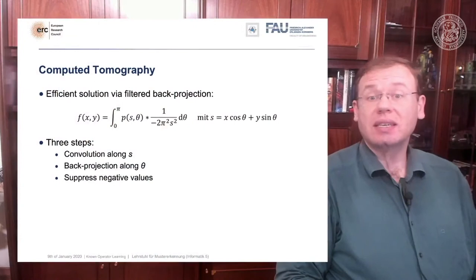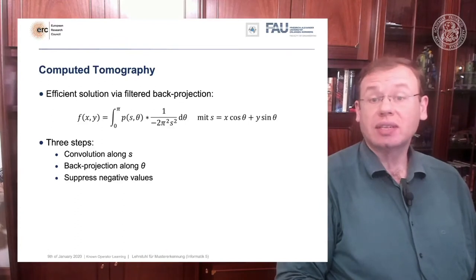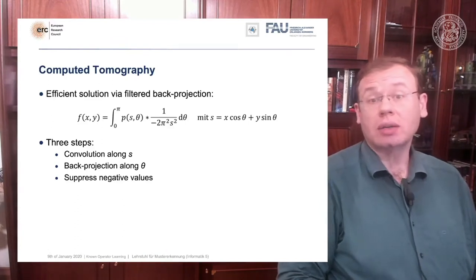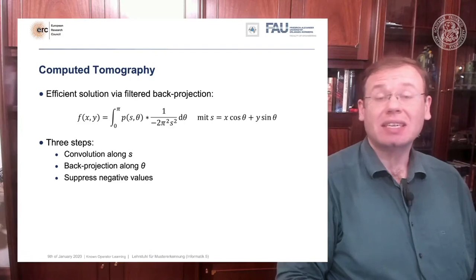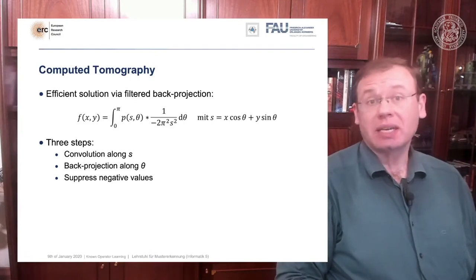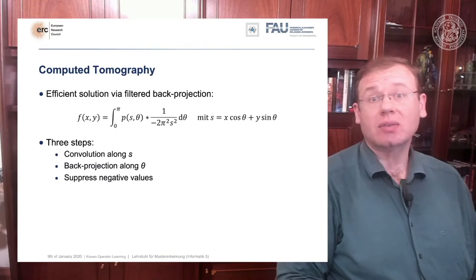Here you see the formal solution to the CT reconstruction problem, the so-called filtered back projection or radon inverse. This is the equation that I referred to earlier that has already been solved in 1917, but CT scanners have only been realized in 1971. So actually, Radon, who found this very nice solution, has never seen it put to practice.